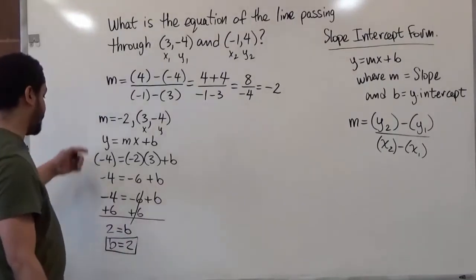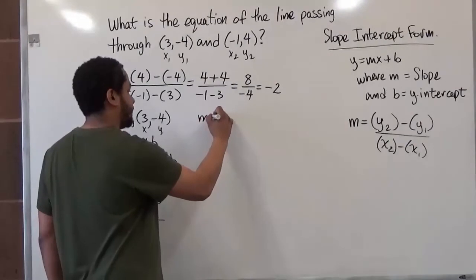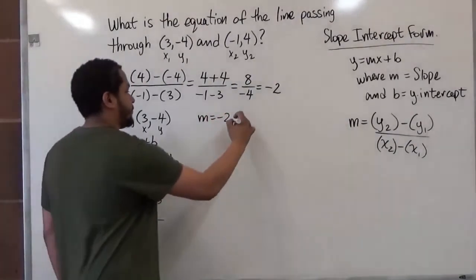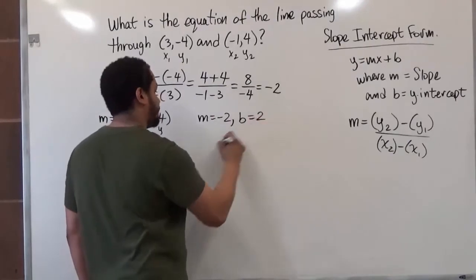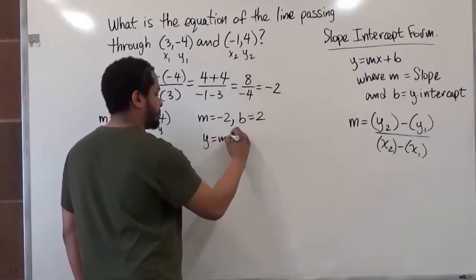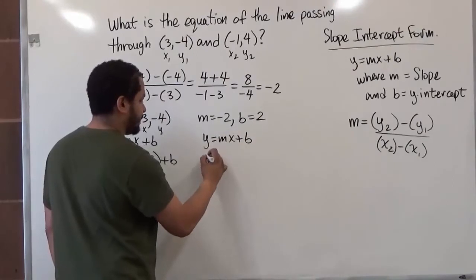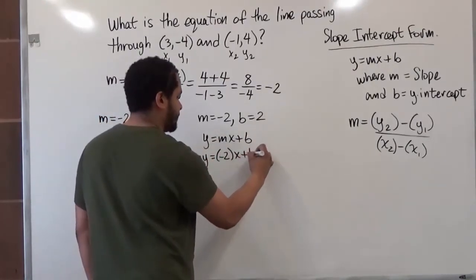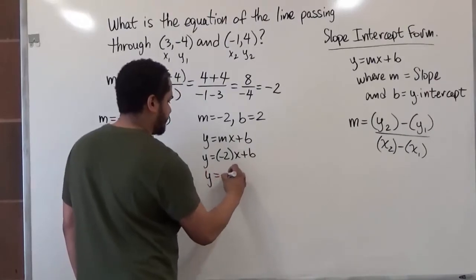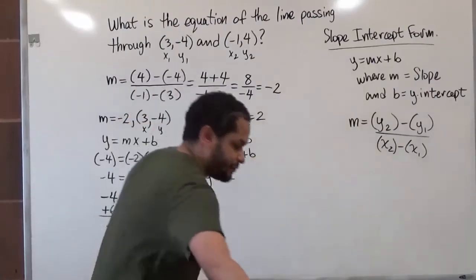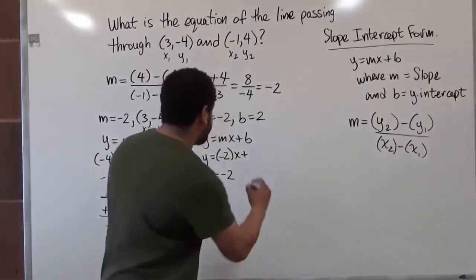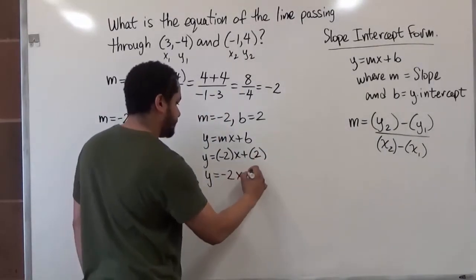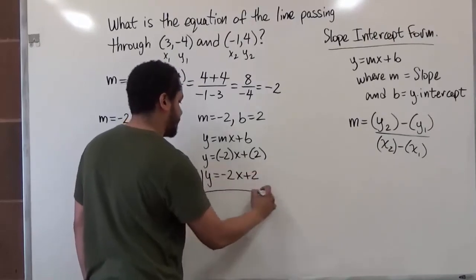Now we have our m and our b, which is all we need for the equation of the line. Our m value is negative 2, our b value is positive 2. When y equals mx plus b, we just insert what we know. In this case, we have y equals negative 2x plus 2. Here's our equation of the line.